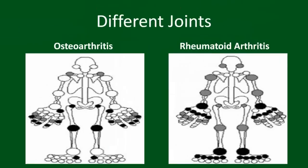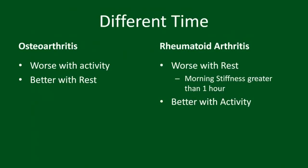The pain or discomfort from osteoarthritis is typically worse with activity and improves with rest. Rheumatoid arthritis is the opposite, being worse with rest and better with activity. Many people with RA also describe being stiff in the joints for at least one hour in the morning.